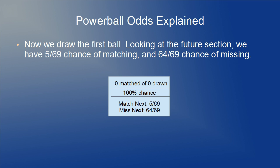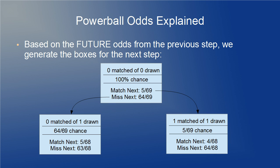Now we draw the first ball — this is the easy step. It's not hard to understand that with 5 potential matches and 64 potential misses in the draw, we have a 5 out of 69 chance of matching and a 64 out of 69 chance of missing. So we generate two boxes for the next step. Follow the arrows: the 100% chance is multiplied by either of the two possibilities for the next step — that's the multiplication principle. Then arrows are drawn to the next step. Fairly straightforward so far, but things are about to get intricate, and we'll try to manage that in an organized way.